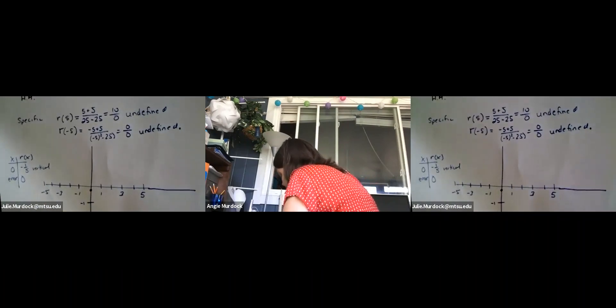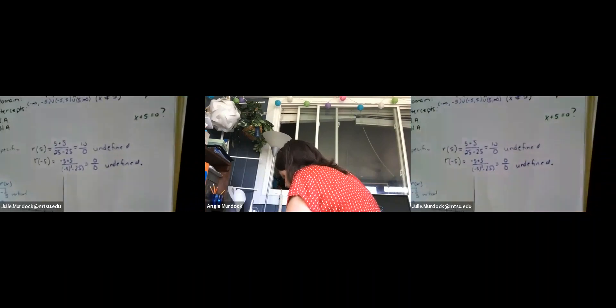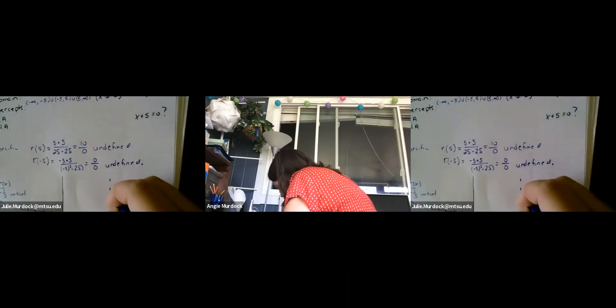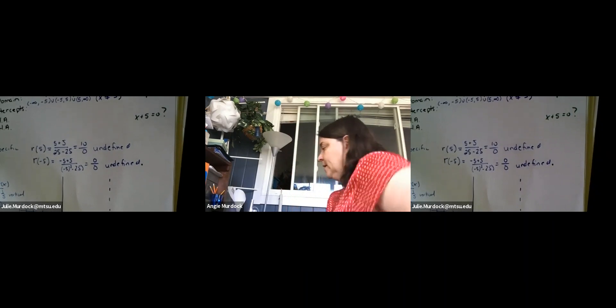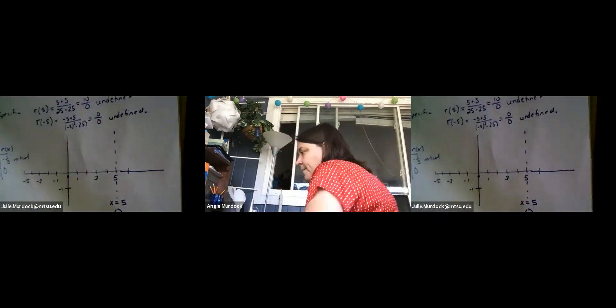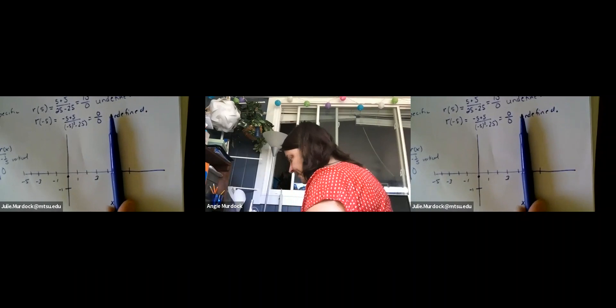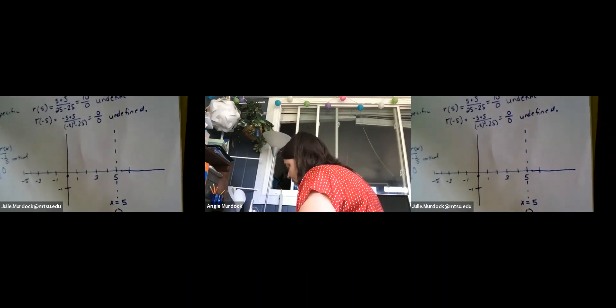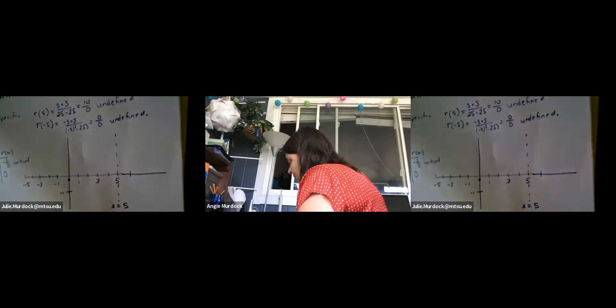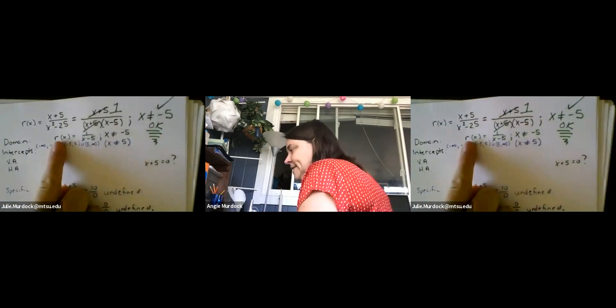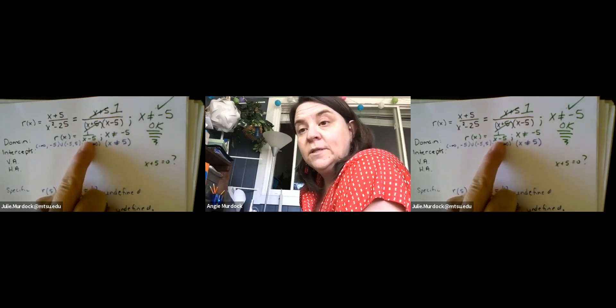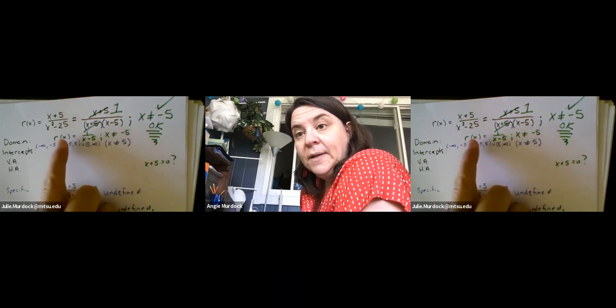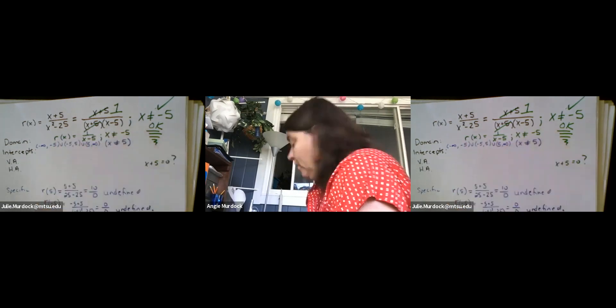When we were finishing up yesterday, we had decided, or at least I pointed out that there was going to be a vertical asymptote at actually a positive five. So here's the rule of thumb to find vertical asymptotes. Maybe I can even write this down for us. The rule of thumb for finding a vertical asymptote is to simplify the rational function, set the denominator equal to zero and solve. But it's got to be the simplified form. Thank you.